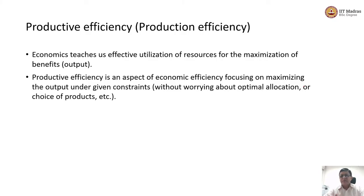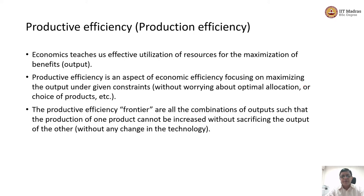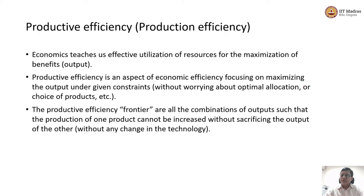Once all those decisions have been made, how do you maximize output given the conditions you operate under? Technology plays an important role, and throughout these calculations we assume the technology doesn't change. Economic ideas talk about something called an efficiency frontier or efficiency envelope. If an economic unit is on that efficiency frontier, we have a combination of outputs such that you cannot increase one output without affecting the other. The frontier is that optimal combination of outputs.